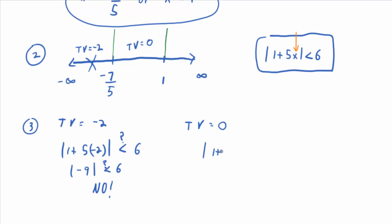Yes. You get 1 plus 5 times 0. You ask yourself is that less than 6? And the answer is yes. Because you just end up with the absolute value of 1 once you multiply the 5 times the 0. Certainly that's less than 6. So shade in the interval from which 0 came.